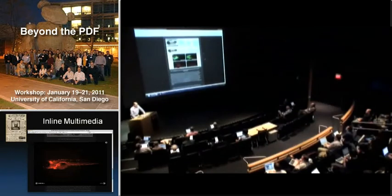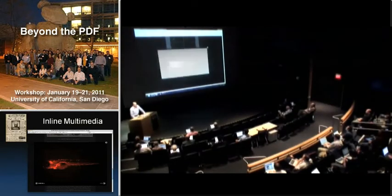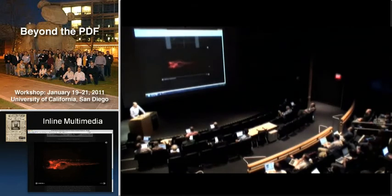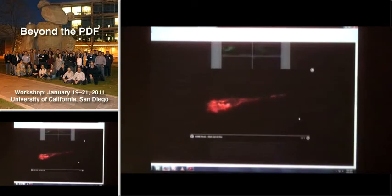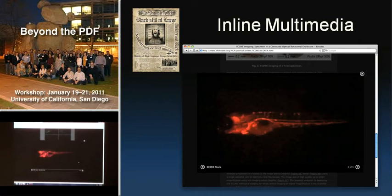If you're perusing the paper and come across a link, you can instantly click on it and pop up a high-definition video. Here you see the red dots are fluorescently tagged red blood cells circulating through the fish's cardiovascular system. It's a pretty impressive video — you can imagine that without this type of format right within the paper, you just lose a lot if you try to describe it by text or just a static picture.